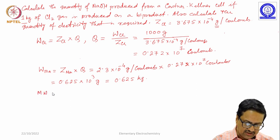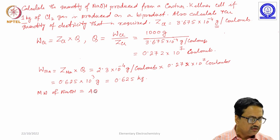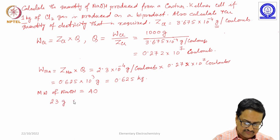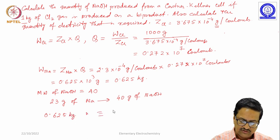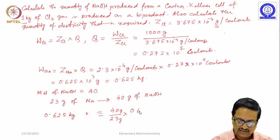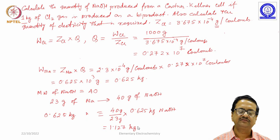Now, we know the molecular weight of NaOH, the molar mass is 40 grams per mole. So 23 grams of sodium corresponds to 40 grams of NaOH. Then 0.625 kg of sodium will correspond to 40 by 23, both are in gram, so gram gets cancelled and 0.625 kg, which is equal to 1.127 kg of sodium hydroxide that will be produced when 1 kg of chlorine gas is released at the anode chambers.